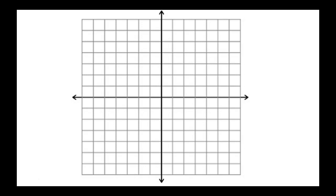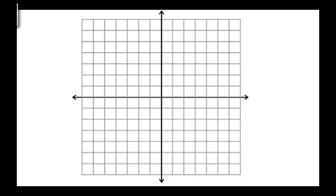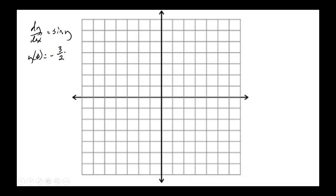Example 2 says: use a direction field to sketch an approximate solution curve for the initial value problem. The IVP is dy/dx equals sine y, and the initial value is y of 0 equals negative three-halves. If you don't see a degree symbol, you assume this is in radians, and that's always a safe assumption unless you see the degree symbol.